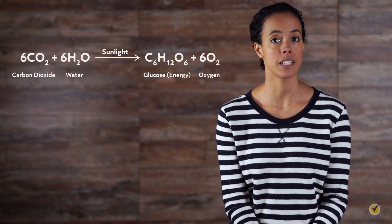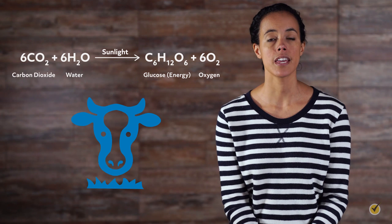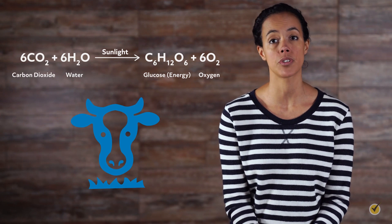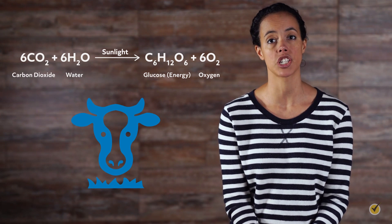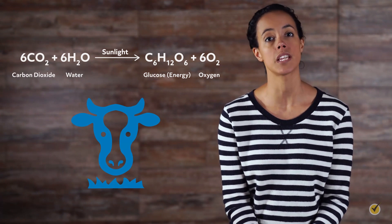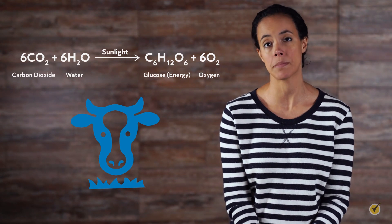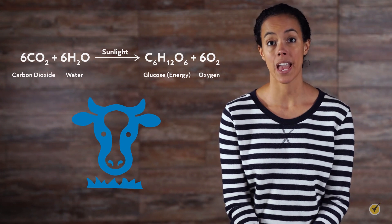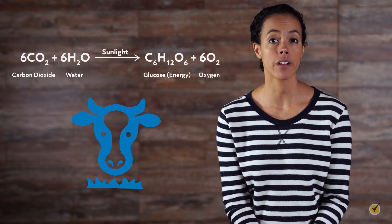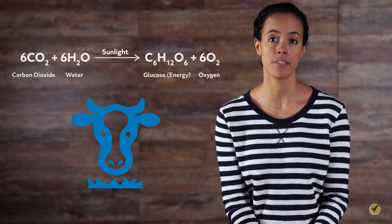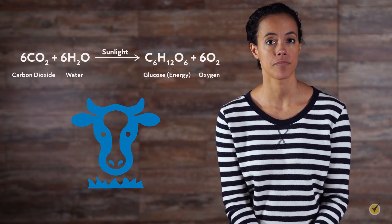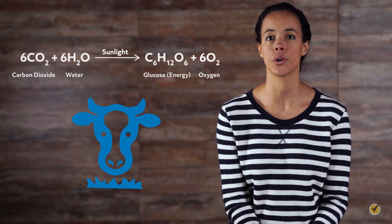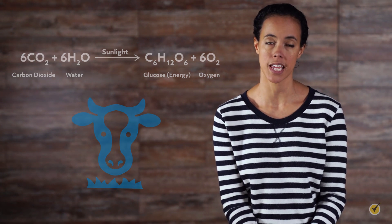So when an animal eats a plant, the animal is getting that glucose from the photosynthesis reaction that it can use in its own energy metabolism. This way, animals are indirect consumers of light energy. Animal cells essentially undergo the reverse process.